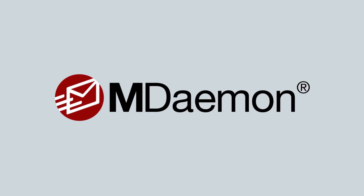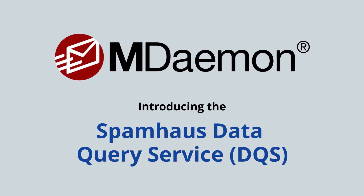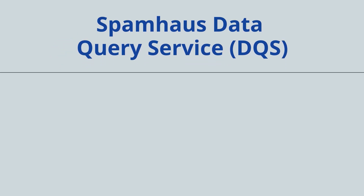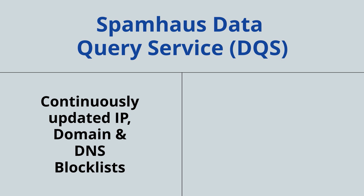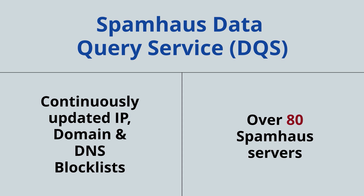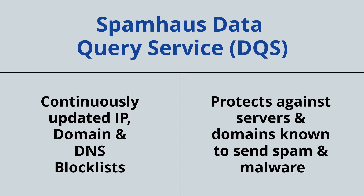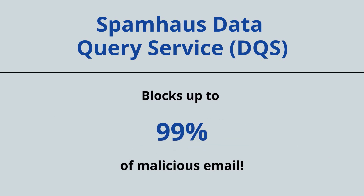MDaemon has a new tool to help fight spam: the Spamhouse Data Query Service, or DQS. The Spamhouse Data Query Service is composed of continuously updated IP, domain, and DNS blocklists via a network of over 80 global Spamhouse servers. These blocklists contain lists of IP addresses and domain names that are known to send spam and malware. The Spamhouse Data Query Service blocks up to 99% of malicious emails and utilizes industry-leading threat intelligence data.